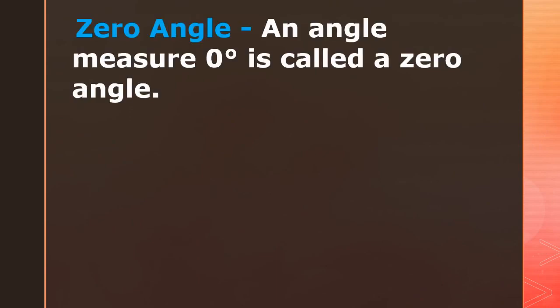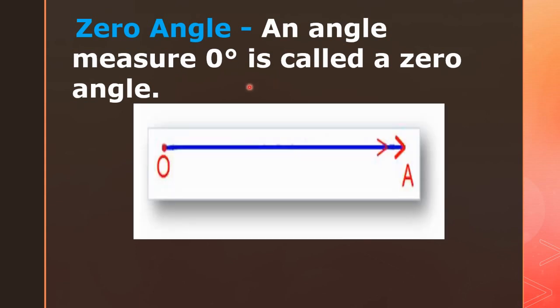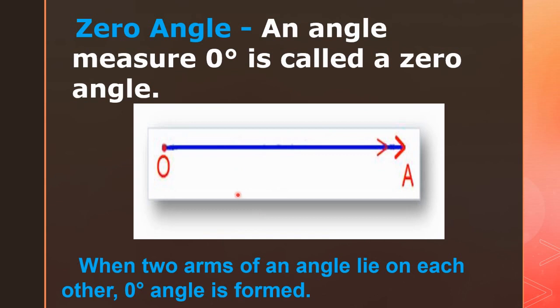Now we will see the zero angle. An angle measured as zero degrees is called a zero angle. When the two arms of an angle lie on each other, zero degrees is formed. In the picture you can see two arms of an angle lying on each other — that is called a zero angle.